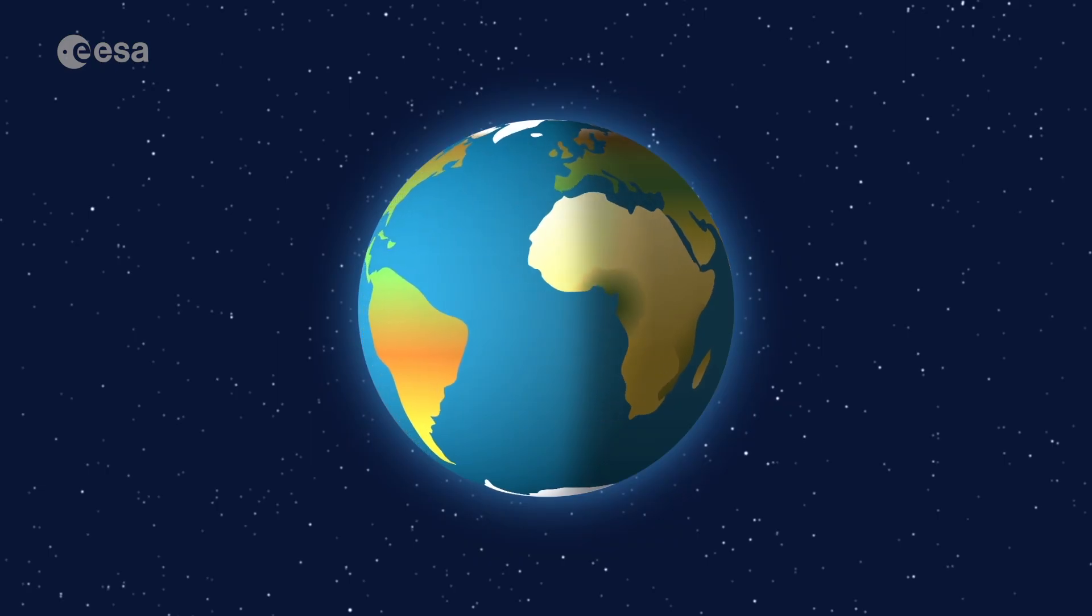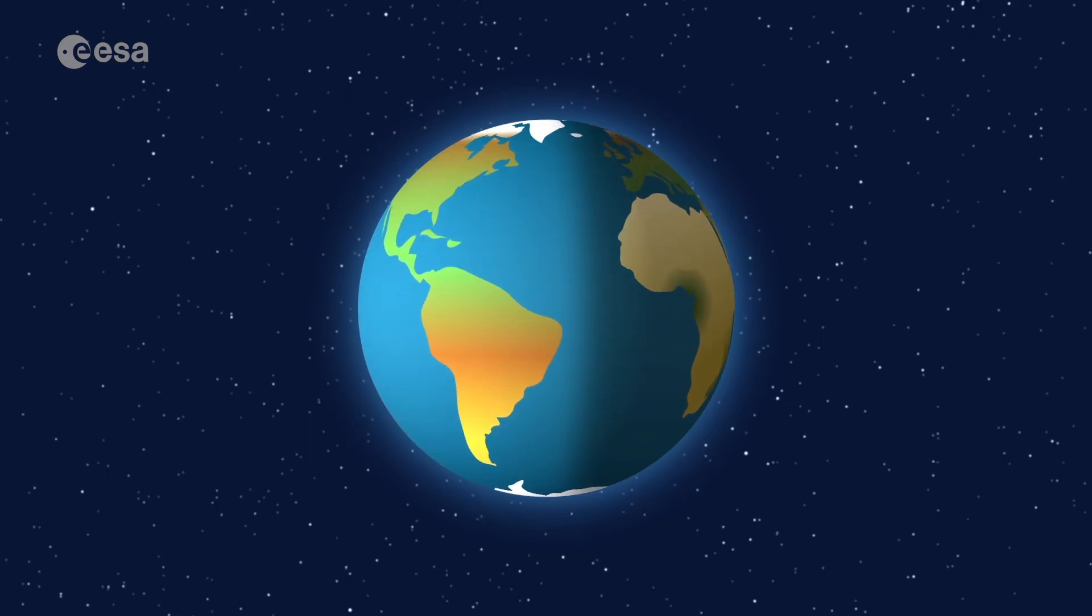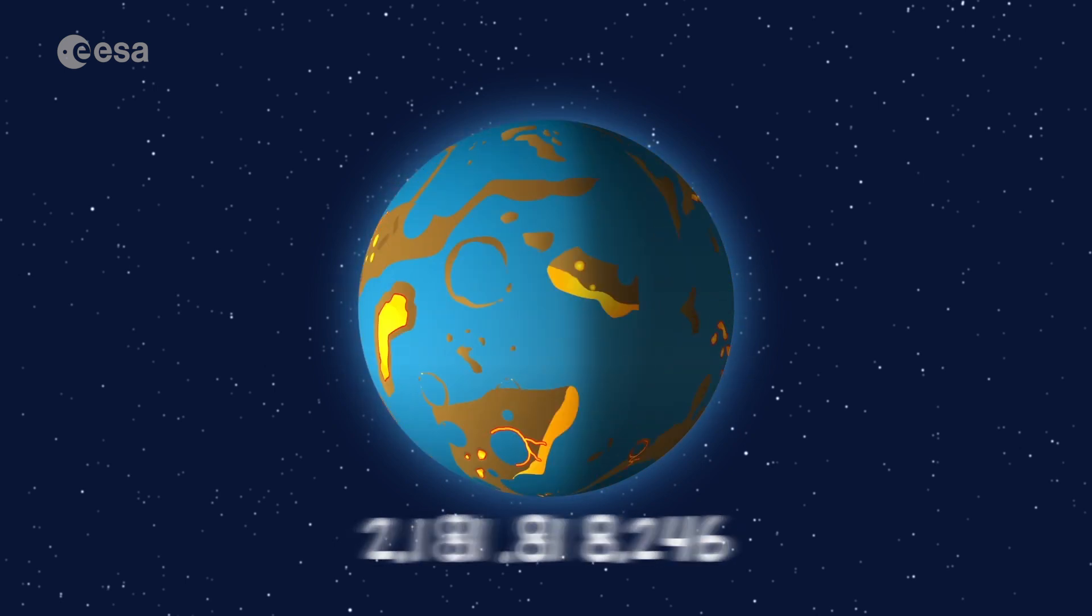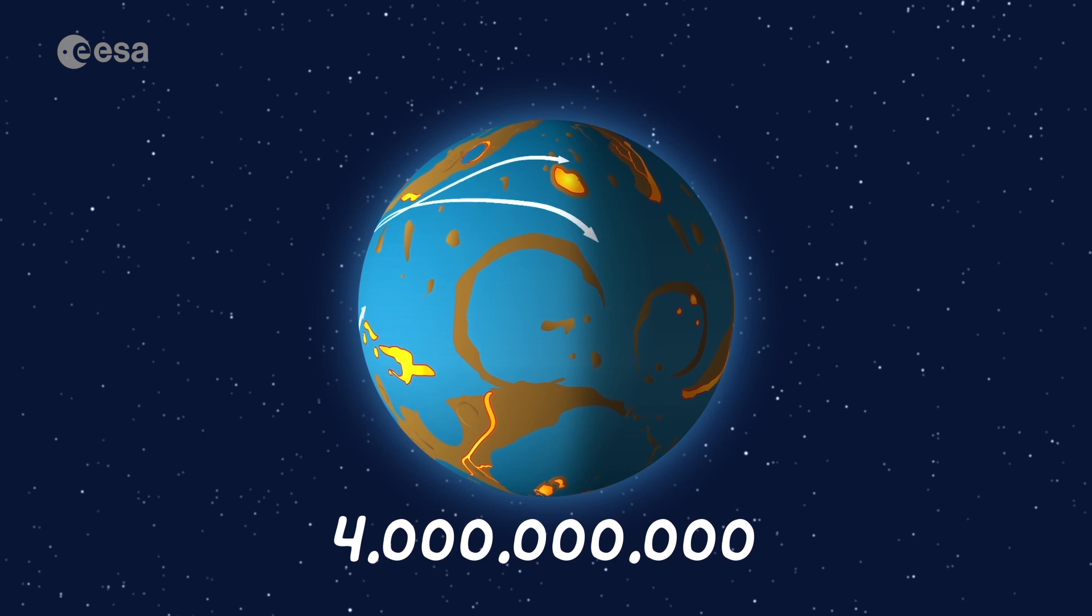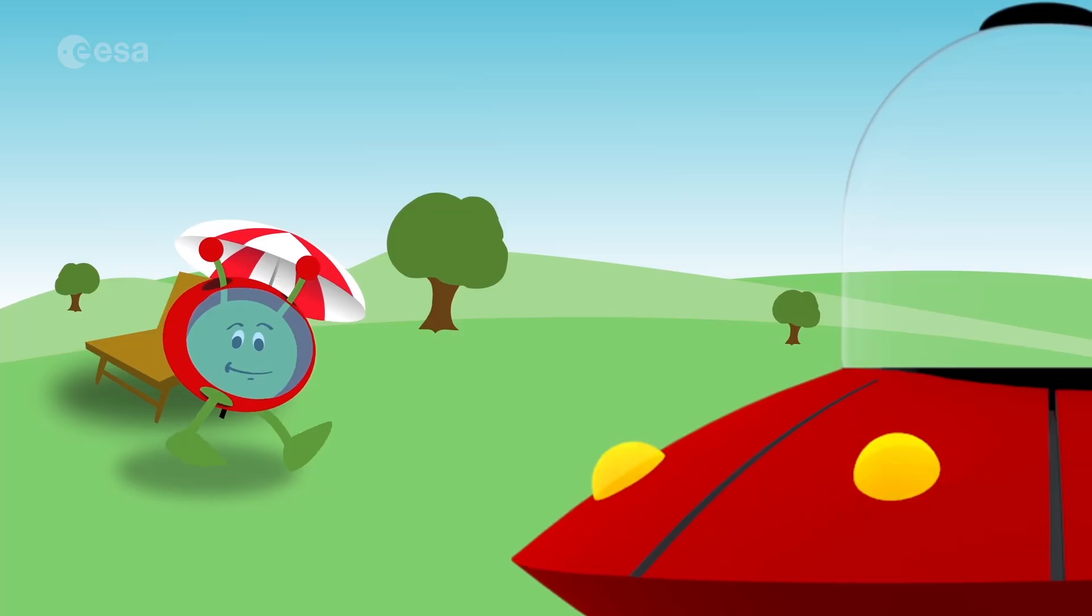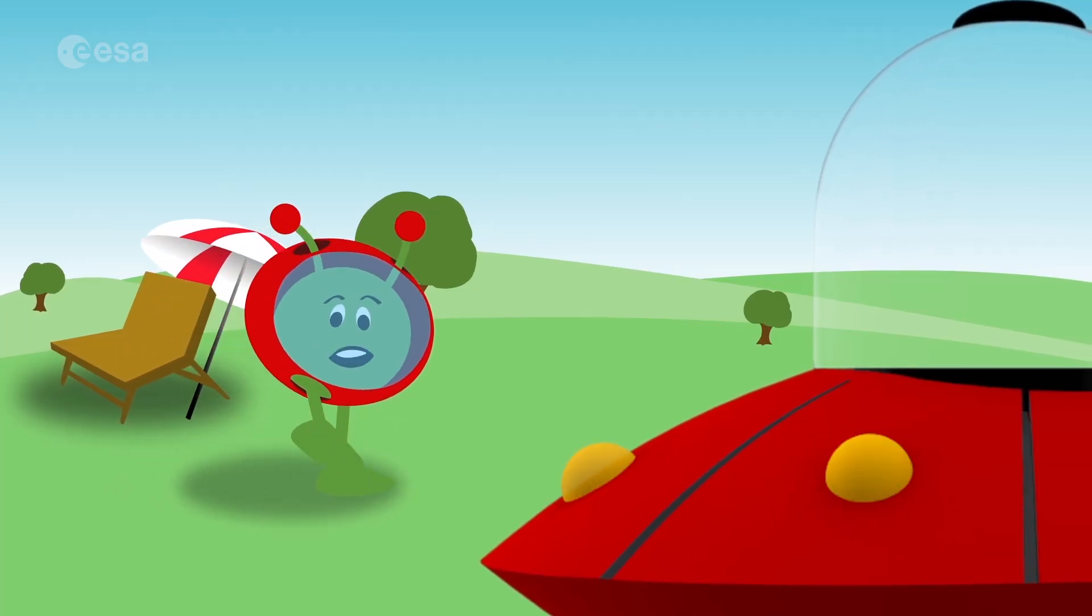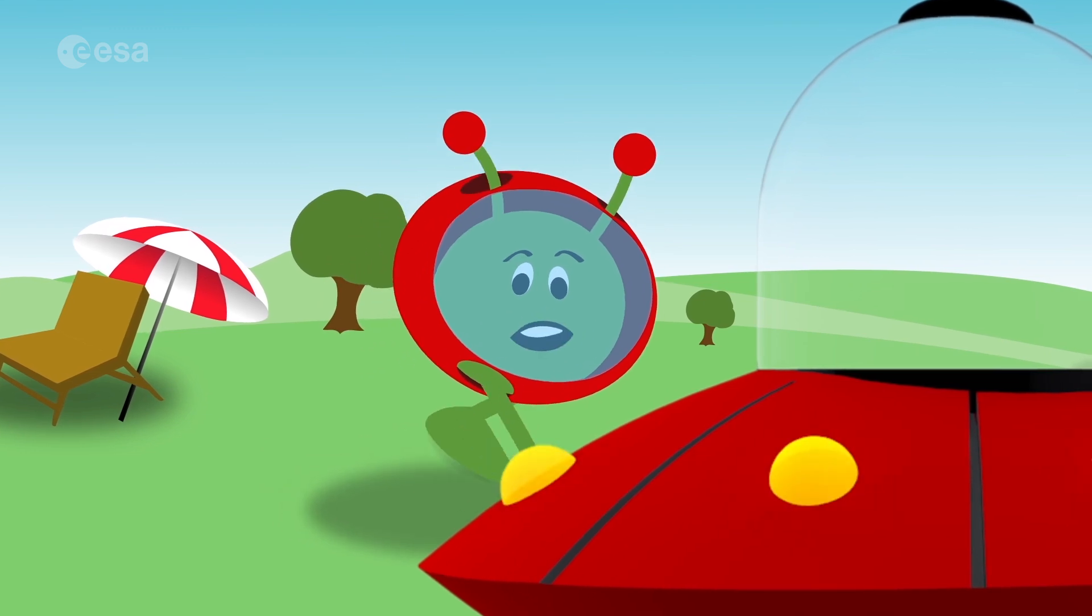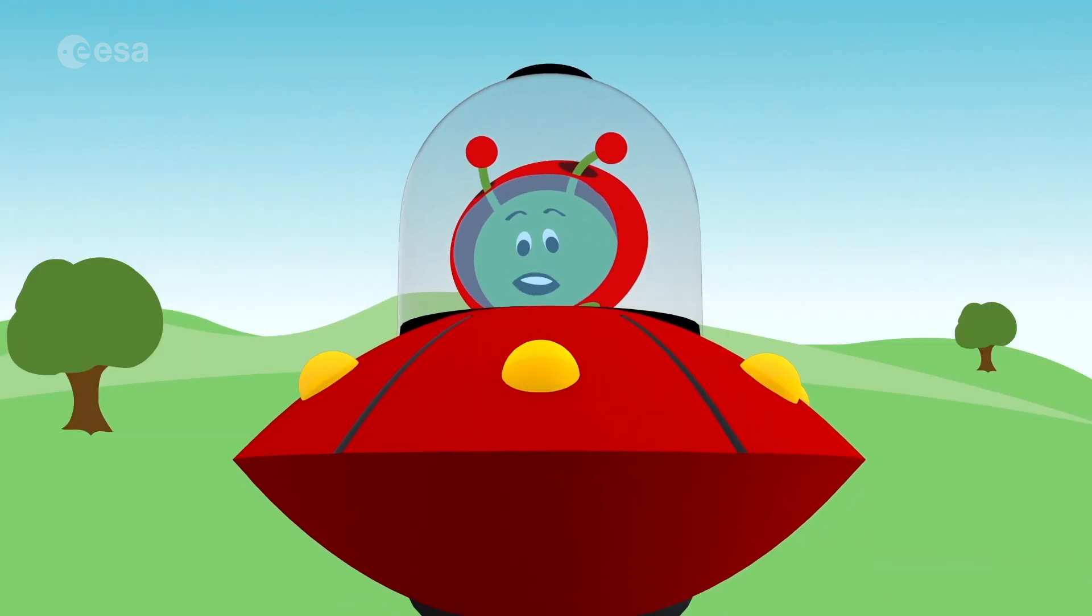The Earth only has a certain amount of water, and it's the same today as it was 4 billion years ago. It travels around and around. This is called the water cycle. It's Mother Nature's clever way of recycling its water. Come, I'll show you how.